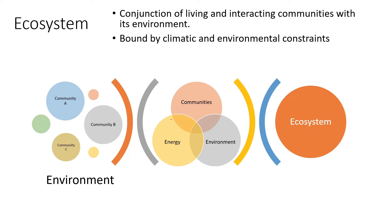For example, if we are talking about a river ecosystem or a forest ecosystem — a river ecosystem is regulated by certain environmental conditions, whereas a forest ecosystem is different from a river ecosystem in terms of environmental conditions. So ecosystems are usually bound by climatic as well as environmental conditions.